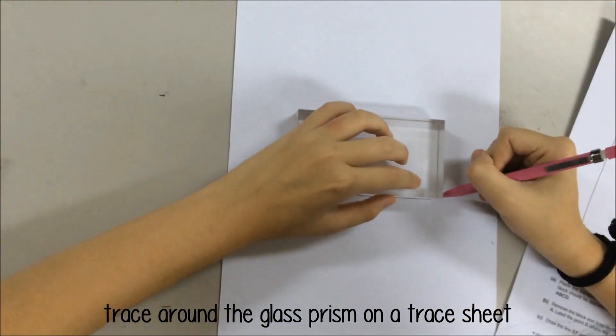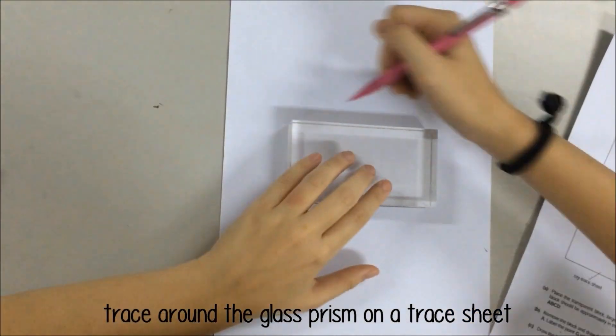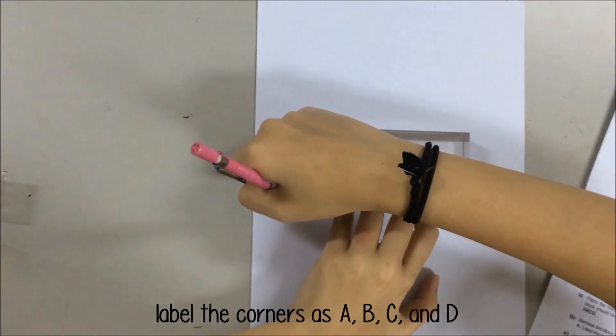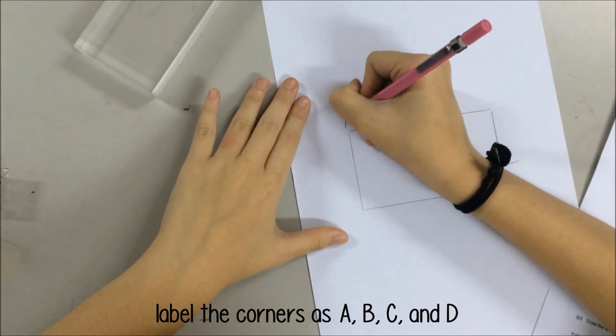Step 1: Trace around the glass prism on a trace sheet. Label the corners as A, B, C, and D.